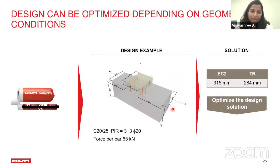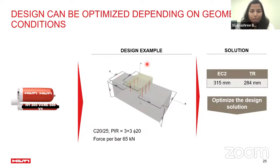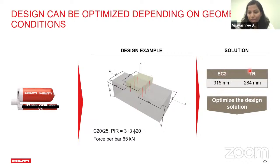To illustrate this in a pictorial representation: for a given geometry of a new concrete member added to old concrete with moment acting on top, the earlier codal provisions required an embedment depth of 315 mm. With TR069 as the design methodology, we are able to reduce this embedment depth, mainly because of the bond splitting behavior advantage and the utilization of anchor theory design resistances.